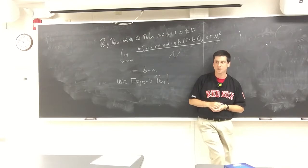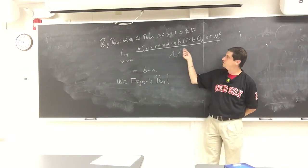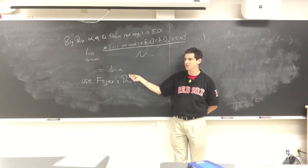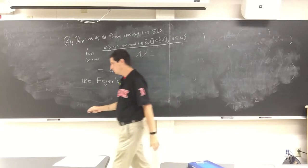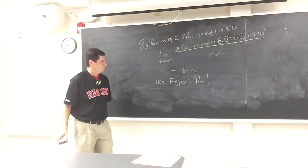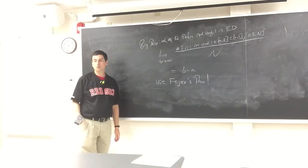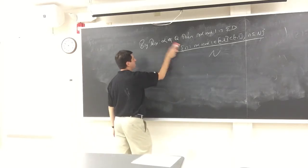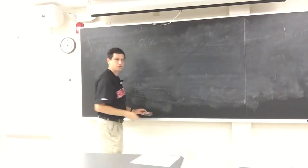Before we prove equidistribution, it's instructive to ask a weaker question. This theorem tells us the fraction of times we fall in [a,b] converges to b minus a. An easier question: do we ever get close to every point? If it's equidistributed, we'd certainly get arbitrarily close to any point, since we can take a tiny interval around it. This leads to the notion of denseness.